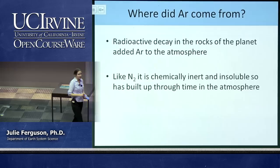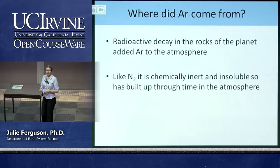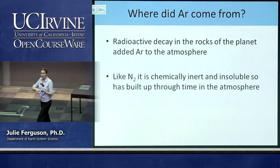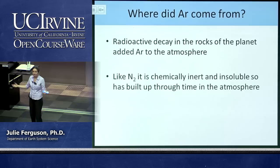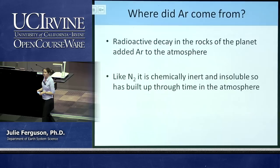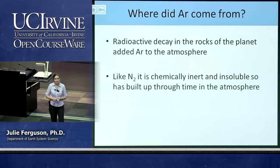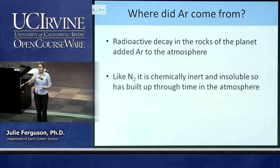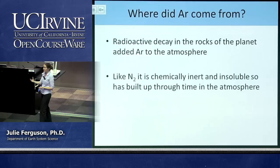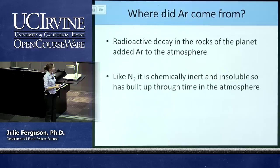Argon is another noble gas — also really unreactive. Just like nitrogen, even though it's released in tiny amounts, once it's up there it's not going anywhere. Over the 4.5 billion year history of the Earth, it's just built up until it makes up a large part of our atmosphere today. Argon isn't actually released by volcanoes — it comes from the radioactive decay of potassium in our rocks. Things like granite in the Sierra Nevada mountains: the potassium in those rocks gradually decays and becomes argon, which is released into the atmosphere.